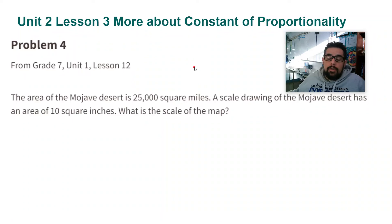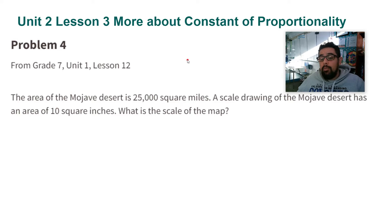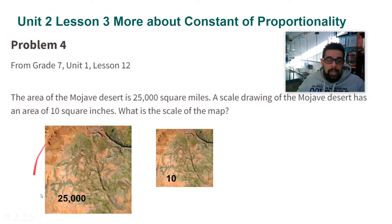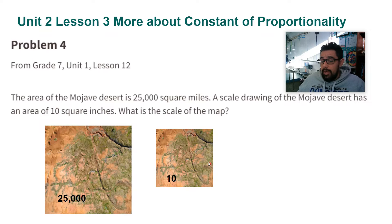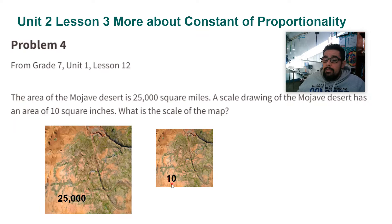So right here we have two things going on. We have the picture of the Mojave Desert and the actual Mojave Desert — they are scale drawings of each other. The actual Mojave Desert is 25,000 square miles, and the scale drawing is 10 square inches.